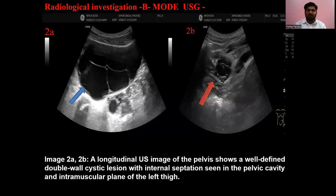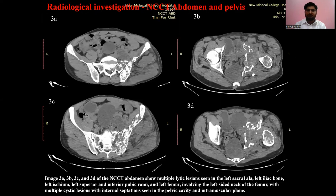On ultrasound, B-mode USG image number 2a and 2b is a longitudinal ultrasound image of the pelvis, showing a well-defined double-walled cystic lesion with internal septation seen in the pelvic cavity, and an intramuscular plane of the left thigh in image number 2b.